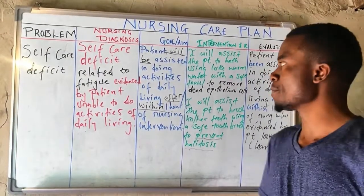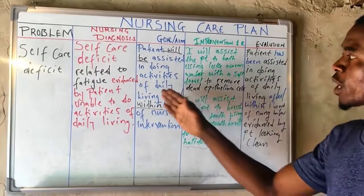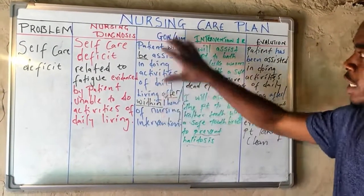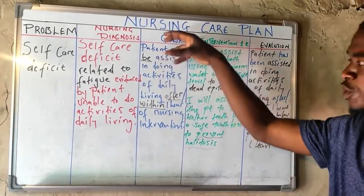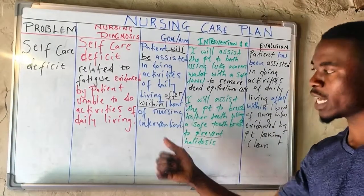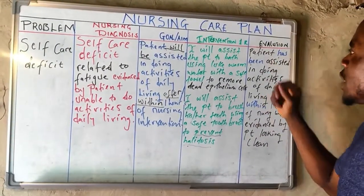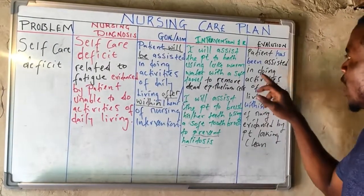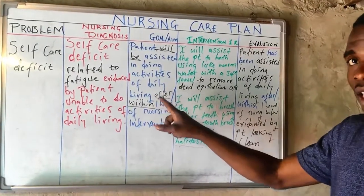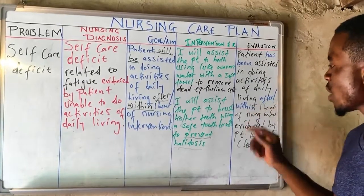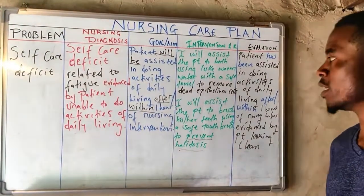Moving on to the evaluation: you obtain it directly from the goal or aim. Simply rewrite it, but change 'will be' to 'has been,' and then add evidence. For example: 'Patient has been assisted in doing activities of daily living within one hour of nursing intervention, evidenced by patient looking clean.'